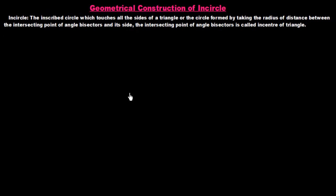In this session we study about the geometrical construction of an incircle. An incircle is the inscribed circle which touches all the sides of a triangle, or the circle formed by taking the radius as the distance between the intersecting point of angle bisectors and its side.